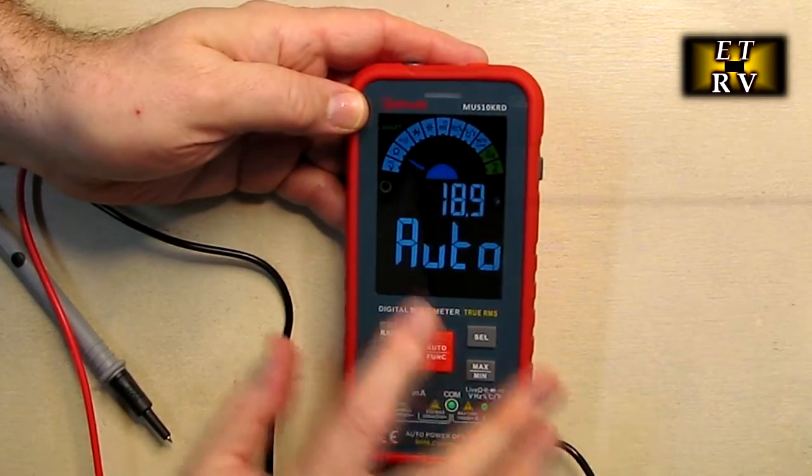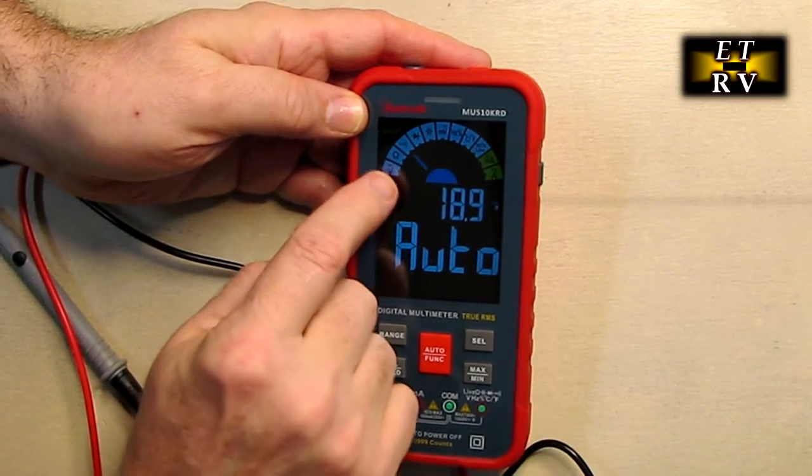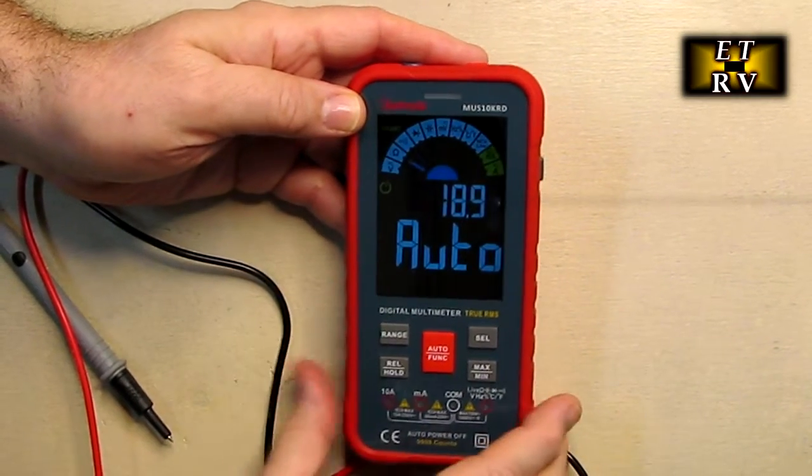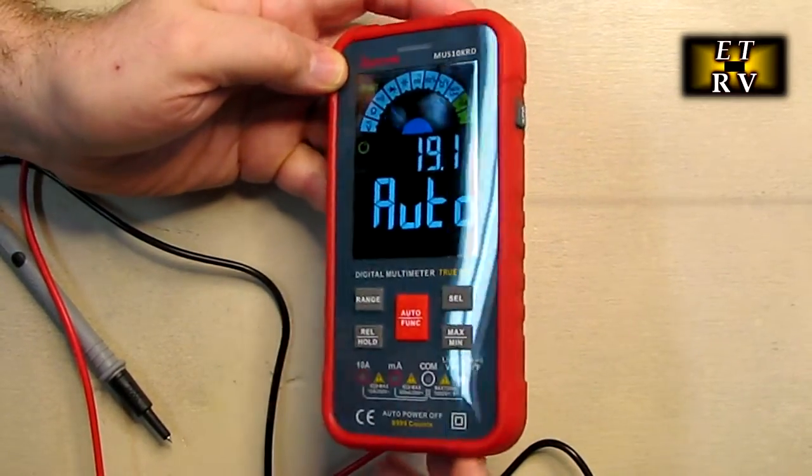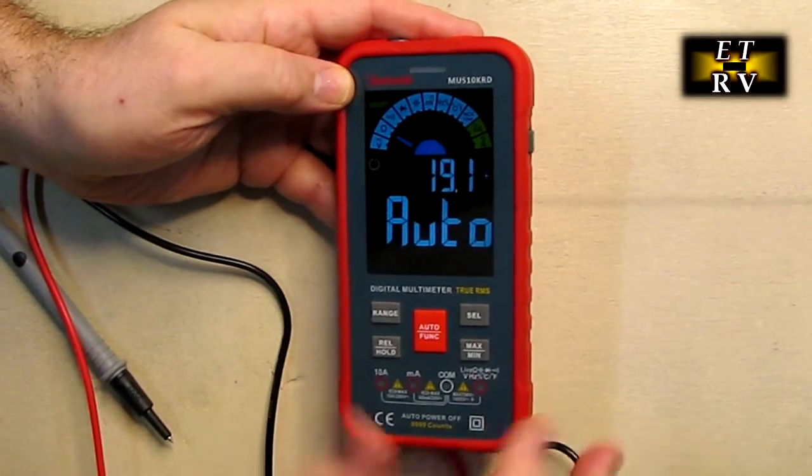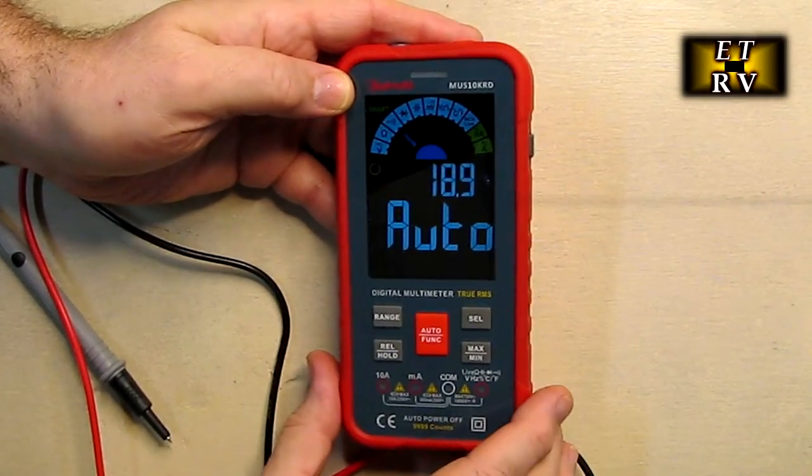And you notice it goes into automatic mode. And that means that voltage DC and AC, and resistance and continuity will be automatically detected when you put those leads in right there. It does light up the leads for a temporary amount of time to let you know what's going on.